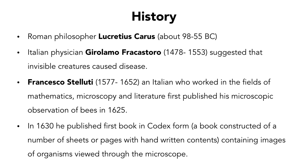In 1630, Stelluti published a book — the first book in the codex form, constructed of a number of sheets or pages with handwritten contents. This book contained images of organisms that Stelluti observed through his microscope.